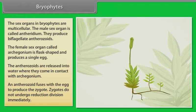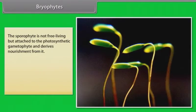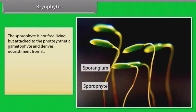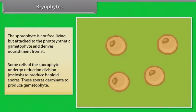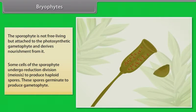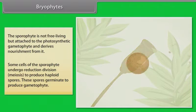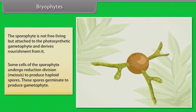Zygotes do not undergo reduction division immediately. This sporophyte is not free living but attached to the photosynthetic gametophyte and derives nourishment from it. Some cells of this sporophyte undergo reduction division, meiosis, to produce haploid spores. These spores germinate to produce gametophyte.